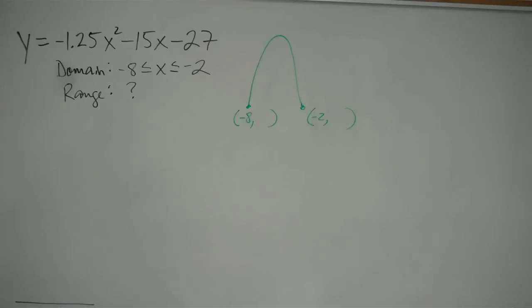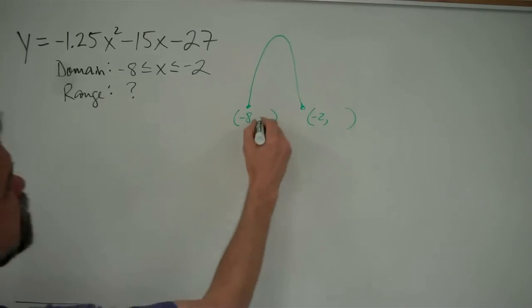Actually, matter of fact, let's go ahead and do that right now. I'm going to take my calculator. By the way, when you're doing problems like this, get yourself a calculator because it makes life so much easier. So I'm going to take negative 8 and I'm just going to store that into my x variable here on the TI-84. And then I'll do negative 1.25x squared minus 15x minus 27 gets me 13. So this is negative 8 and 13.